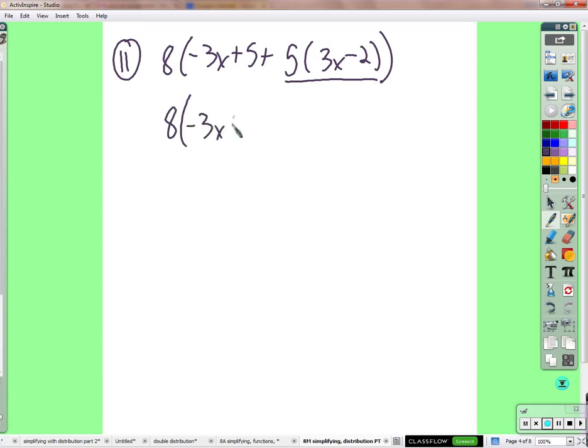Negative 3x plus 5. Five times 3x is 15x. Five times negative 2 is negative 10. We could at this point distribute the 8 to these 1, 2, 3, 4 terms. But we have the same kinds of things here. We can just collect them in one place and distribute less. So we have 12x. Negative 3x plus 15x is 12x. 5 minus 10 is negative 5.